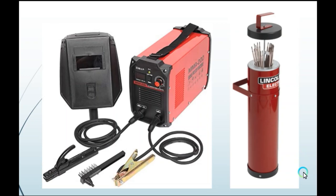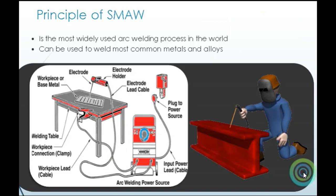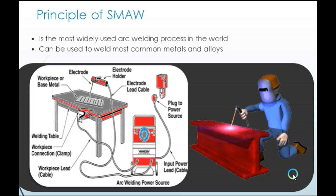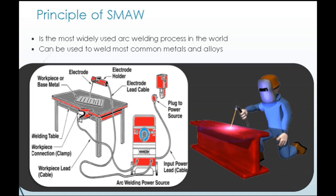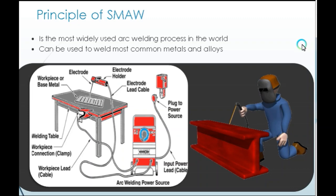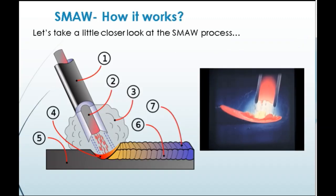The electrode holder and earth clamp are connected to the power source. Electrodes are kept in a portable holding oven. Here the welding machine is connected to the main power supply. As we switch on the machine and touch the electrode to the base metal, the arc generates. A basic arrangement of SMAW is shown in the picture.